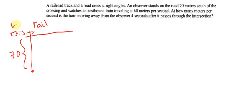And the train is going this way at 60 meters per second, and this distance here is always changing. Okay, so at some point the train is going to be down here somewhere. And let's see what we want to find: at how many meters per second is the train moving away from the observer?